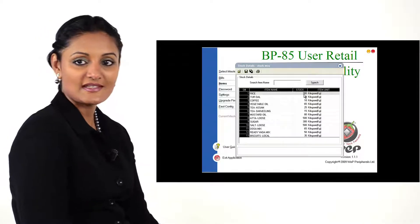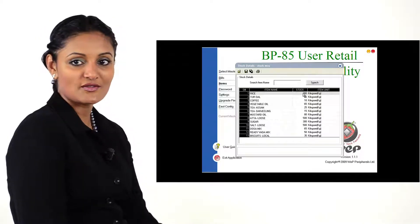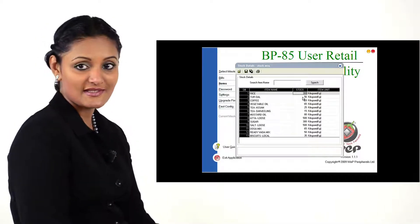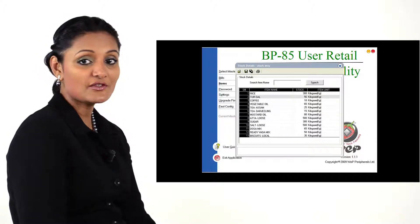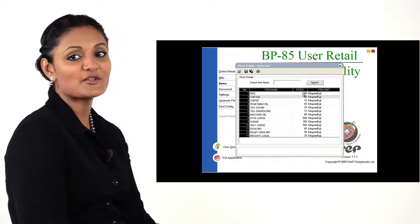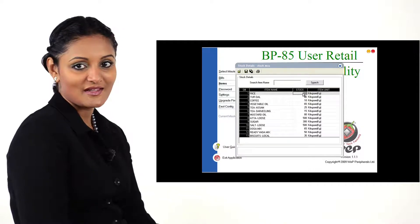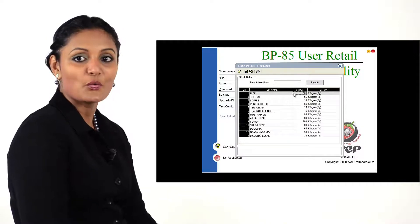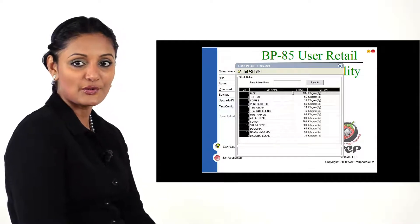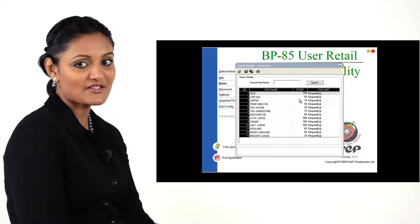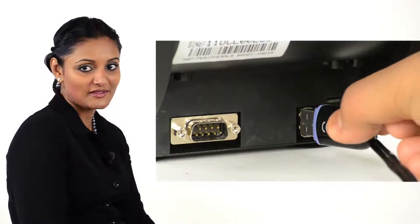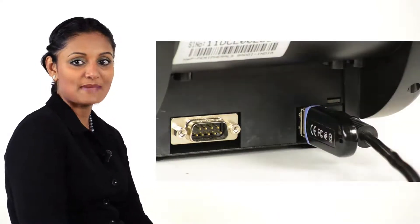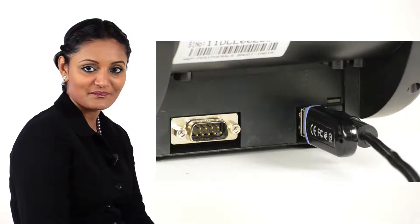Stocks that are maintained or added through the retail utility can be downloaded to the printer even through a USB drive. Here we demonstrate how to download a previously created and saved stock file via a USB pen drive.